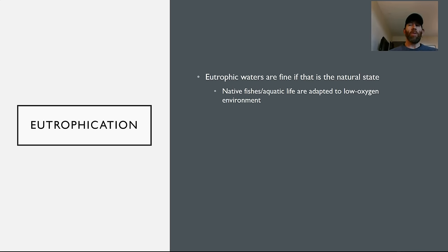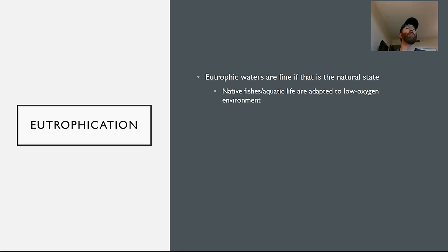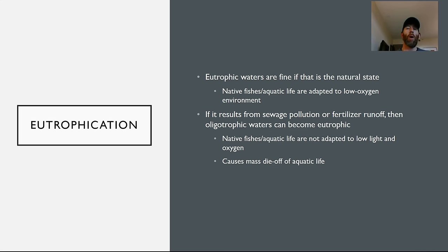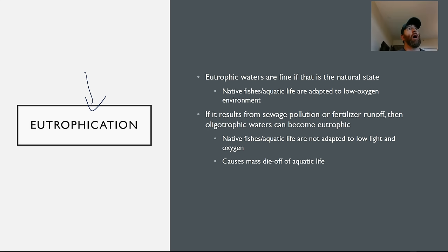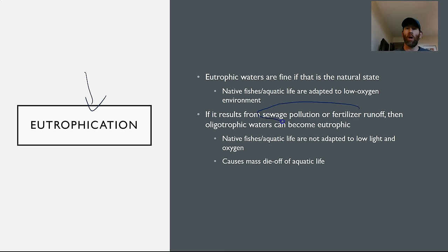Both types of bodies of water are actually fine — there is nothing wrong with a eutrophic body of water if that is its natural state. The reason that's fine is that the plants, organisms, and animals in the aquatic life are adapted to those conditions, like catfish and carp, which survive and thrive in those conditions. What we worry about is the eutrophication of what are normally oligotrophic bodies of water, where a normally clear, high dissolved oxygen environment gets enriched with nutrients, most commonly from sewage or fertilizer runoff.